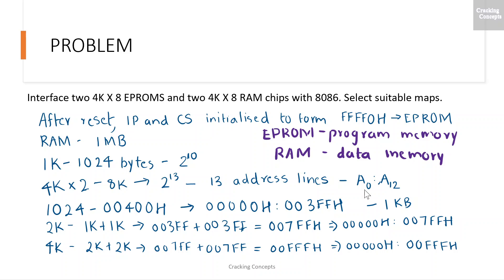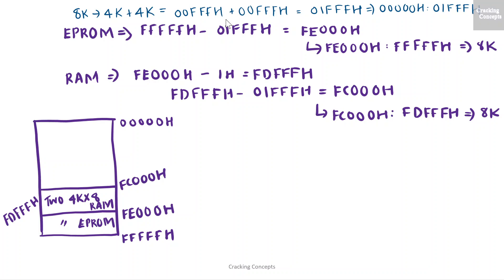Now we need to obtain the address range. 1024 is 00400H in hex. So the range for 1K can be obtained as 00000H — that's the starting address — to 003FFH. This ending address was obtained by subtracting 1 from the size of 1K in hex, that is 00400H minus 1H. Similarly for 2K it is 1K plus 1K, giving a range to 007FFH. So 4K will be 2K plus 2K with a range to 00FFFH. In our question we have 8K, so 8K can be written as 4K plus 4K, giving the corresponding range.